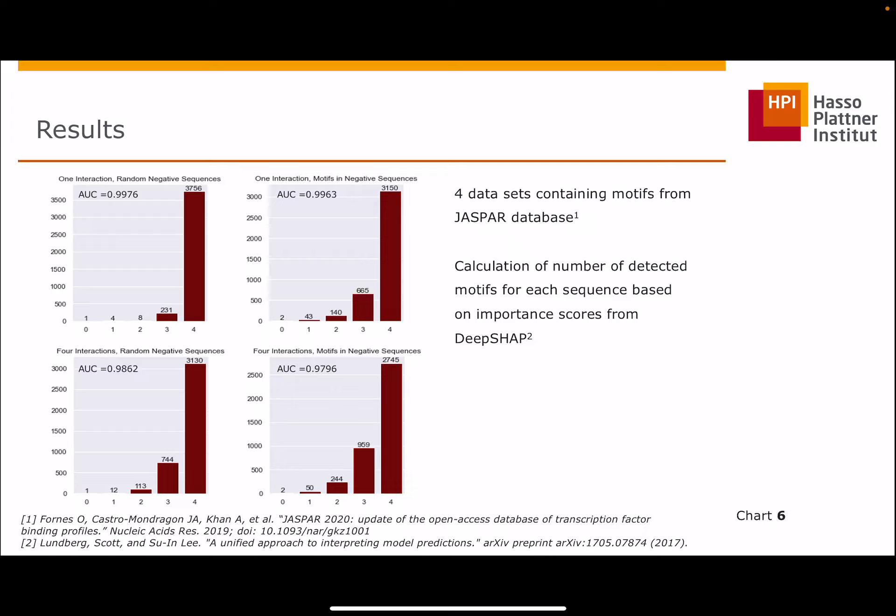On the x-axis, the number of detected motives in one sequence is shown. We can observe that when adding motives to the negative dataset, the number of detected motives decreased, where the performance stays similar. So, for example, you can see that in fewer sequences all four motives could be detected. The same applies to the increased number of subpopulations. However, this effect could also be due to higher complexity because we have more patterns in the data.